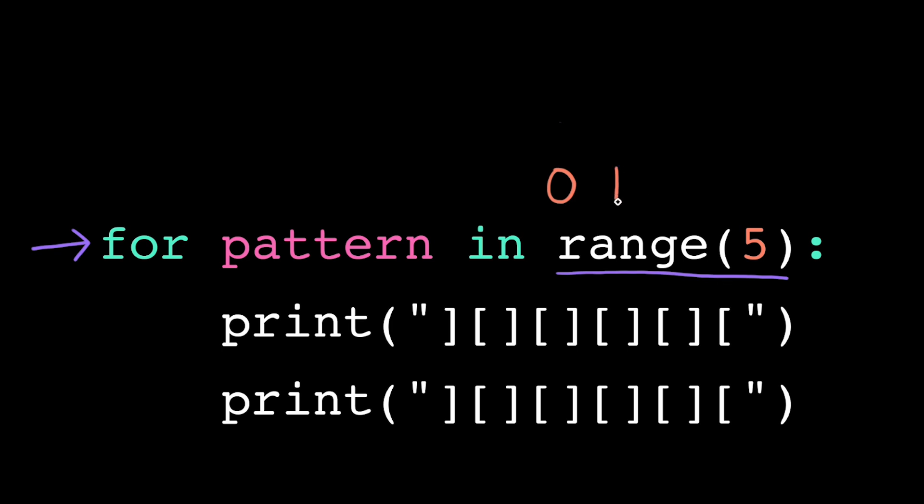The start value is inclusive and the stop value is exclusive, so this is really the range 0, 1, 2, 3, 4, stopping before it reaches 5.